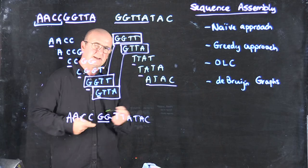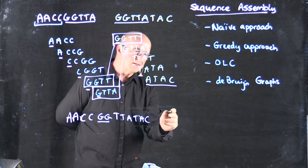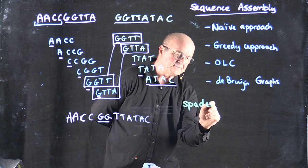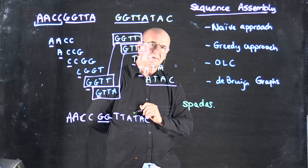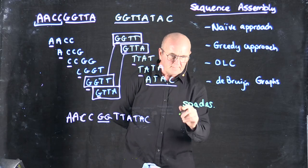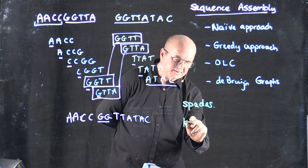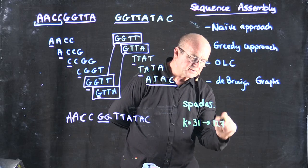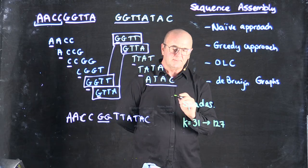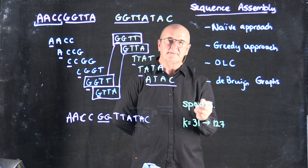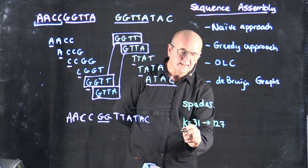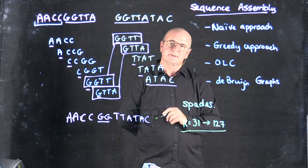And so none of our software really would use 4-mers. One of the most popular bioinformatics de Bruijn graph assemblers is a program called SPAdes. And SPAdes uses a combination of k-mers from 31 to 127. It typically uses something like 31, 55, 77, 99, 127. But you can set those k-mers as an option to SPAdes.